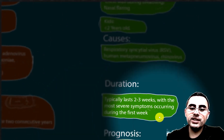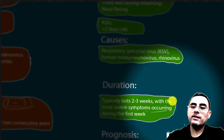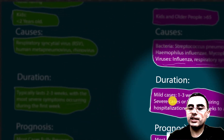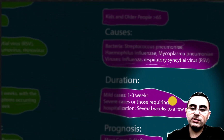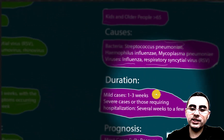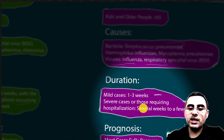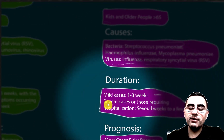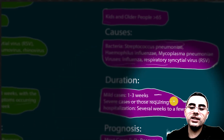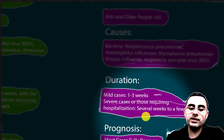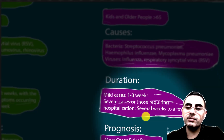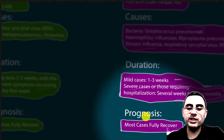Duration of bronchiolitis is typically two to three weeks, with the most severe symptoms occurring in the first week. Duration of pneumonia is usually one to three weeks, but in severe cases it can last several months and may require hospitalization.